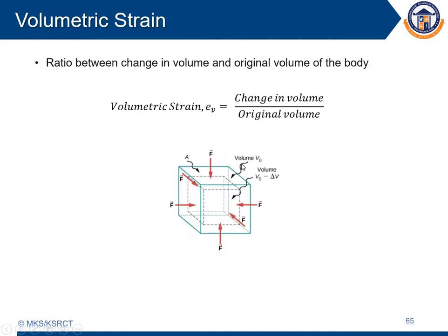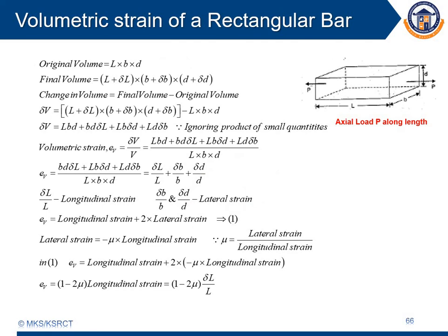The next and final topic is volumetric strain. Volumetric strain is nothing but — following the generic formula of strain as change in dimension by original dimension — in this case it is change in volume by original volume. For a rectangular bar having length L, breadth B, and thickness D, we are applying a tensile load P in the direction of length.